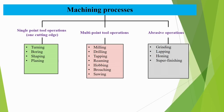Then there are multi-point tool operations like milling, where a milling cutter has a number of teeth, drilling, tapping which is used for making threads, reaming which is used for finishing the hole, hobbing which is used for cutting gears, broaching where tools are arranged on a cylindrical tapered surface with depth gradually increasing, and sawing where there are a number of teeth. Then there are abrasive operations in which a very large number of abrasive particles of random geometry and random orientation are used — examples are grinding, lapping, honing, and super finishing.